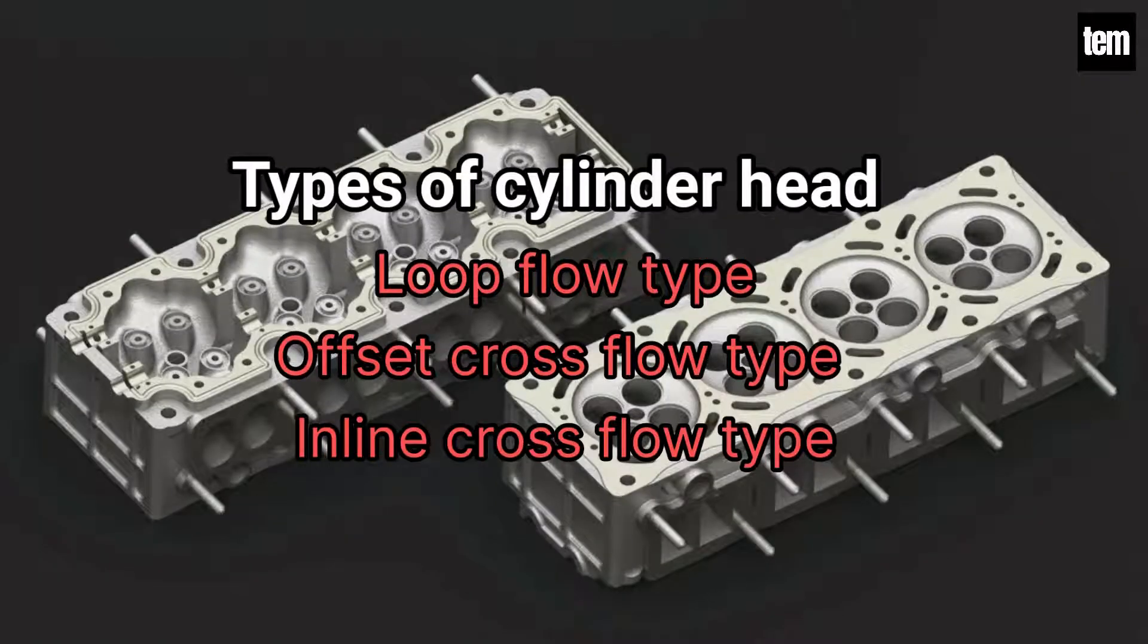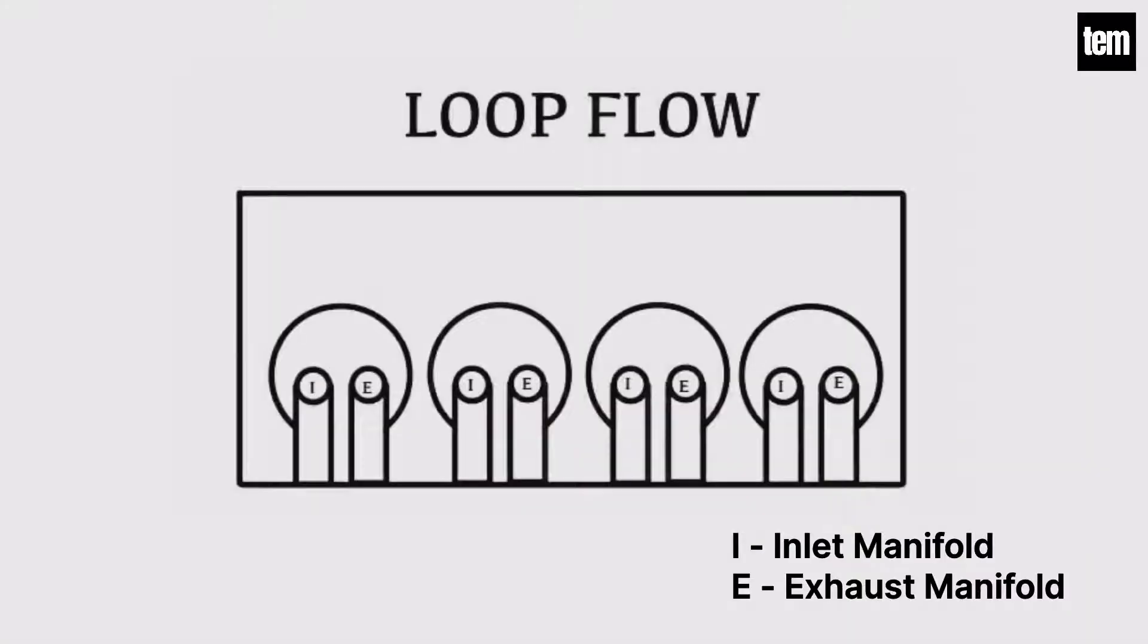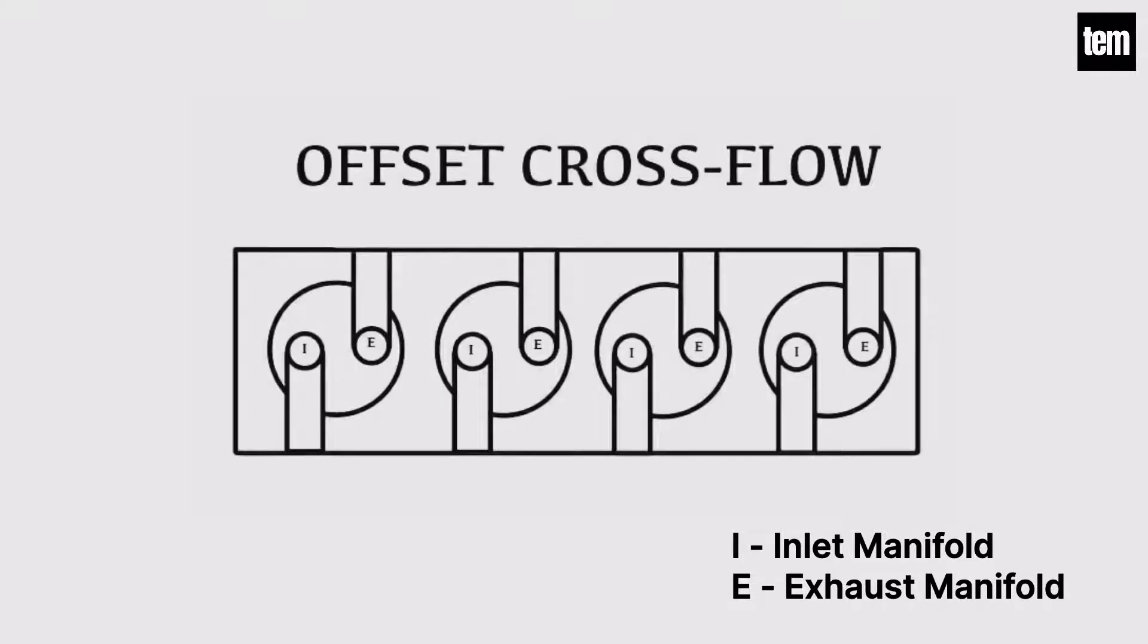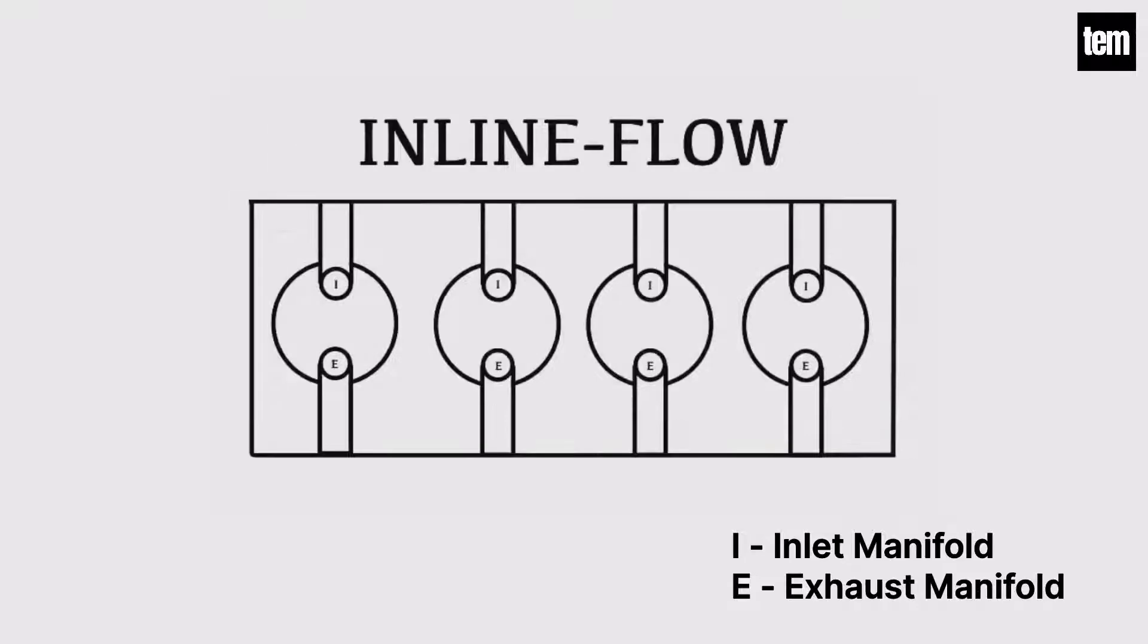There are three different types of cylinder heads available depending on the valve and port layout: loop flow type, offset cross flow type, and inline cross flow type. In the loop flow type, the inlet and exhaust manifolds are on the same side, which helps preheating of the intake air. In the inline cross flow type, the valves are positioned transversely and usually inclined to each other, while the inlet and exhaust manifolds are on different sides of the cylinder head. This arrangement gives better performance but is costlier.